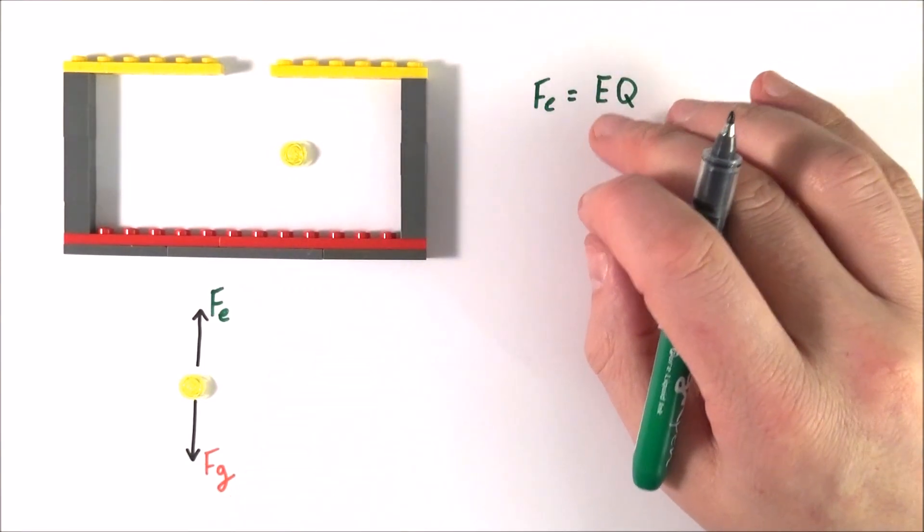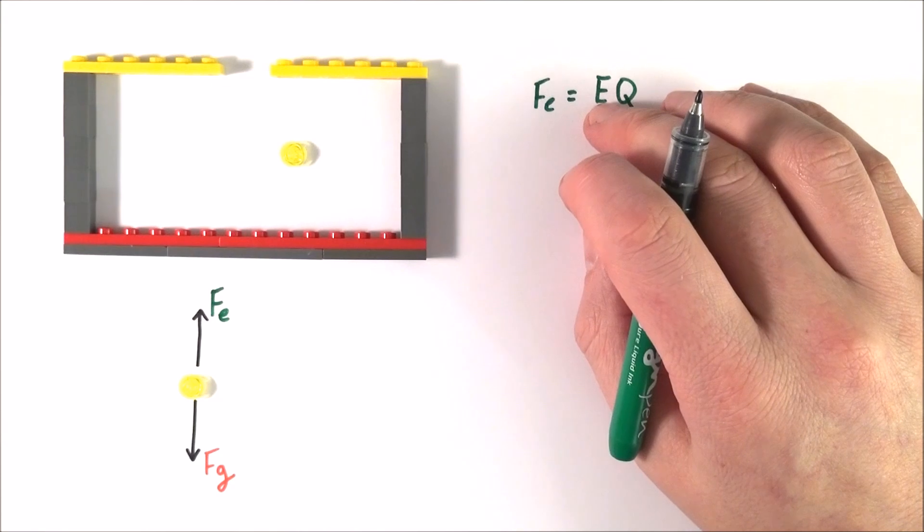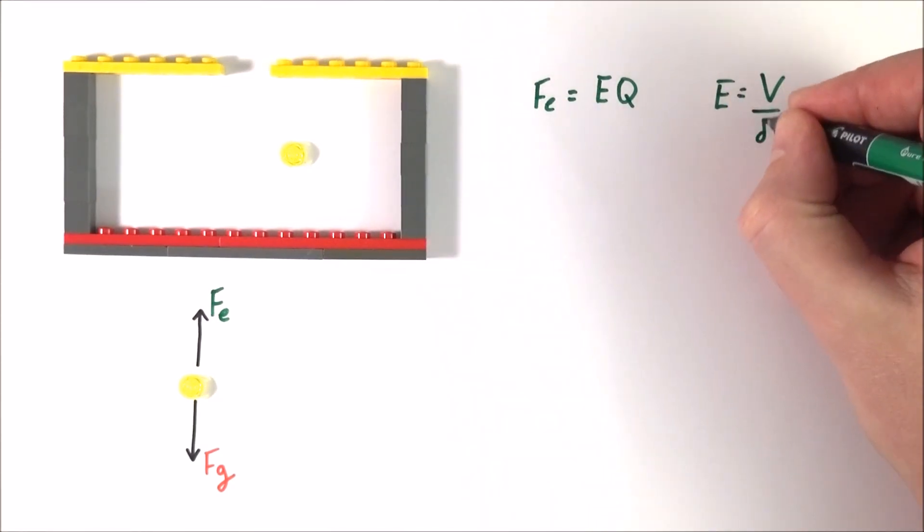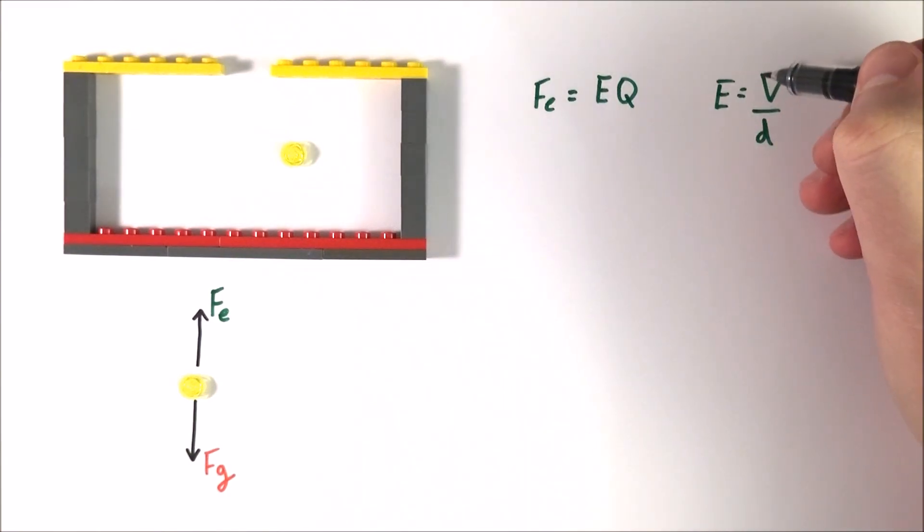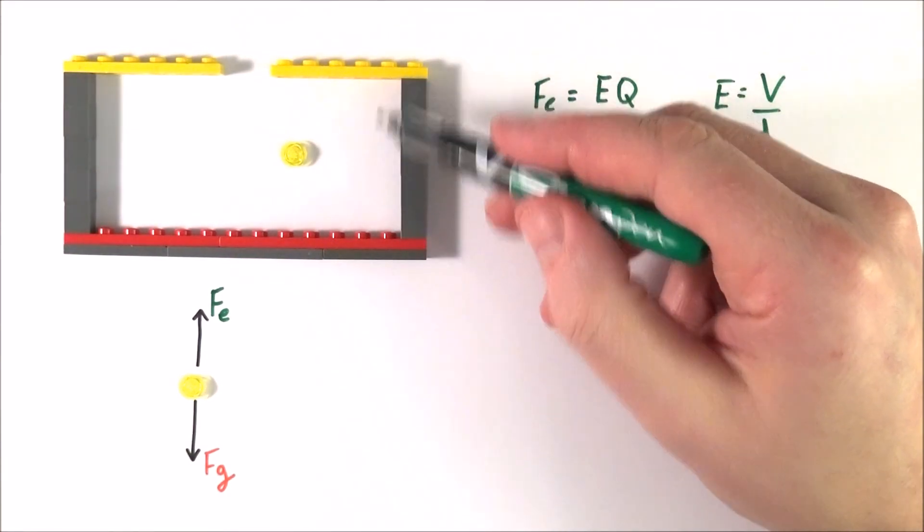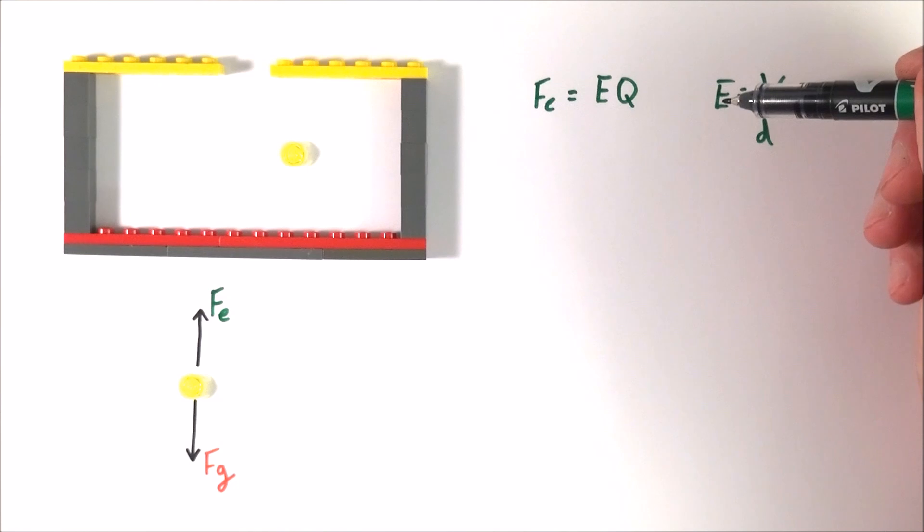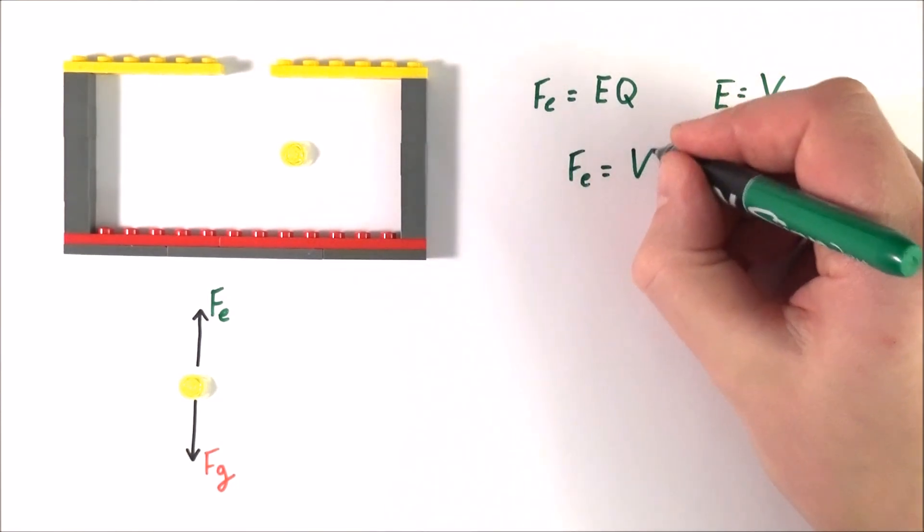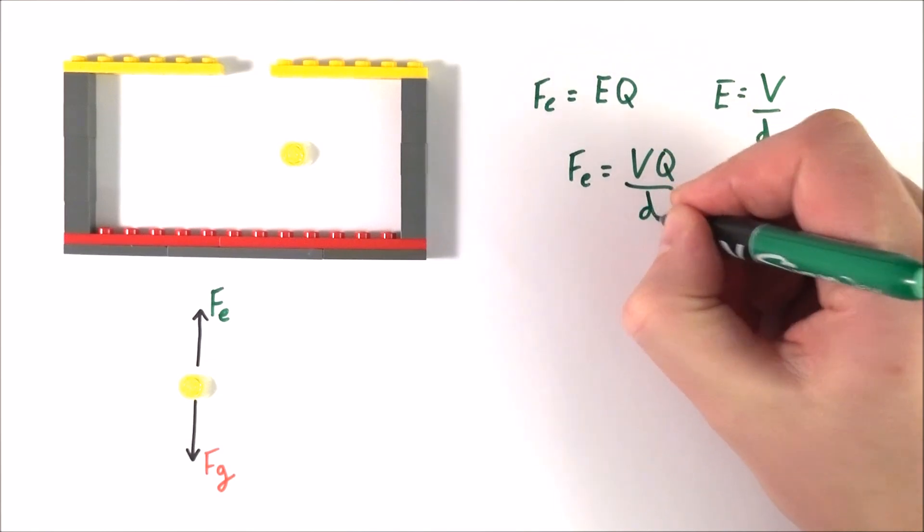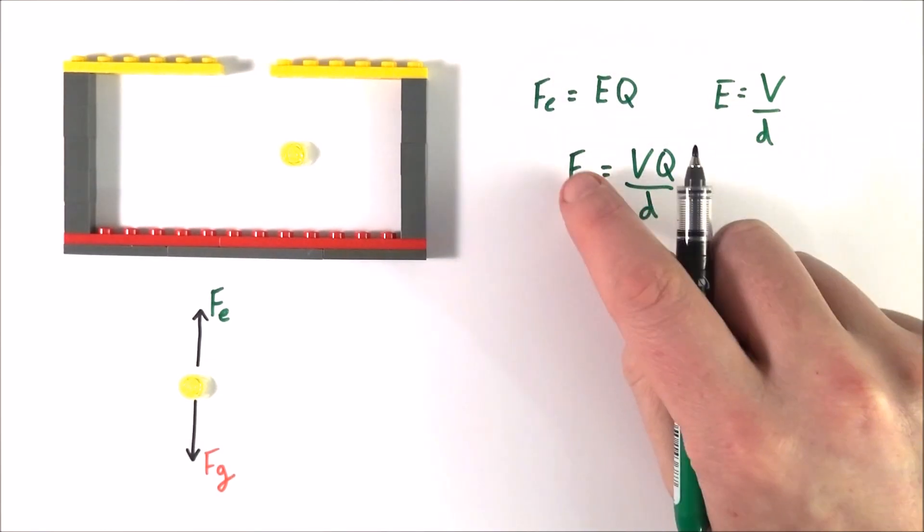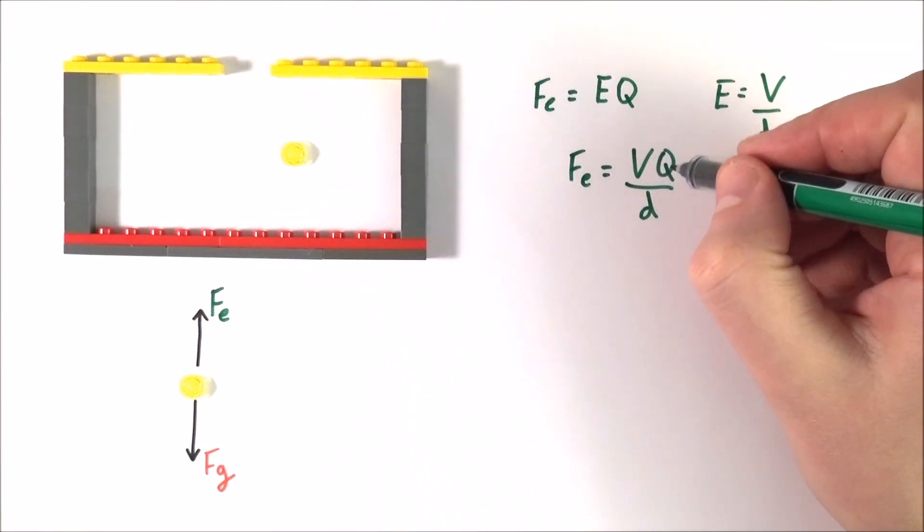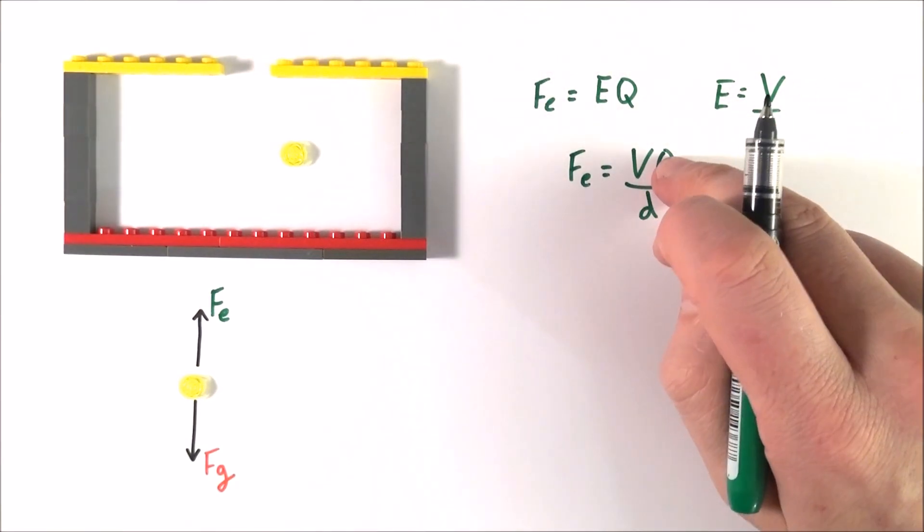However, how do we work out the charge of the electric field? Well E is equal to V over D. If we know the strength of the potential difference and we know the distance between the plates we can work out the electric field strength. Therefore this force is equal to Vq over D and that tells us then the size of that force upwards. We know V, we know D, but we're not quite sure about Q, but that's what we're looking for in this experiment.